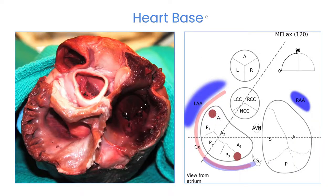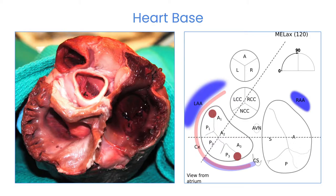Here we have a dissection of the heart base. We see the aortic valve in the middle — you can see the right and the left coronary cusps. The non-coronary sinus of Valsalva is here, closely associated with the intra-atrial septum. We have the right atrium here, the right atrial appendage, the tricuspid valve deep inside with the anterior, posterior, and septal leaflets. We have the left atrium here with the left atrial appendage opened up and the mitral valve inside. The coronary sinus is buried underneath behind the posterior mitral annulus and comes out into the right atrium at the junction of the posterior and septal leaflets of the tricuspid valve. Out on the front here we have the pulmonic root and the pulmonic valve — you can see the anterior and the left cusp of the pulmonic valve.